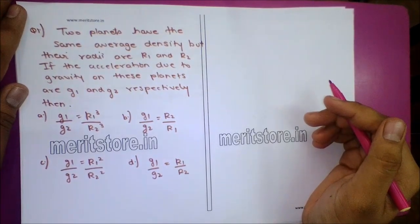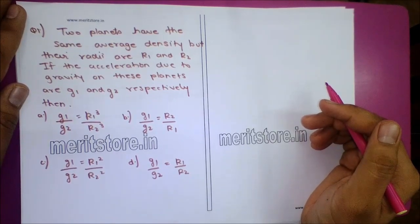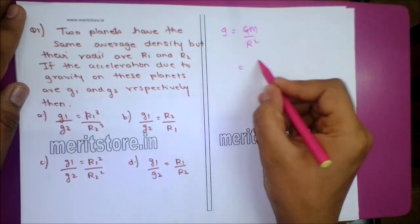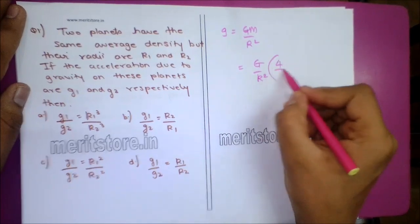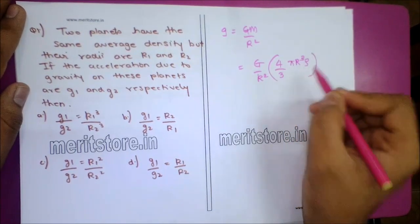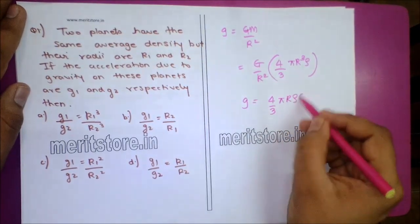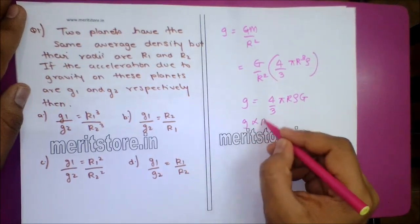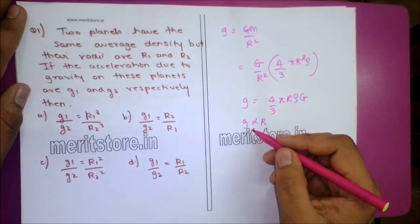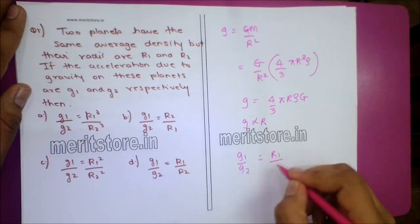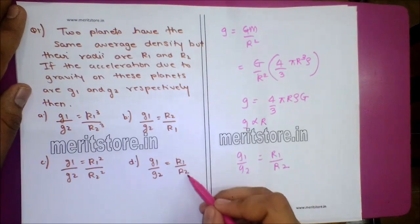Question 1: Two planets have the same average density but their radii are R1 and R2. If the acceleration due to gravity on these planets are G1 and G2 respectively, we know g = Gm/R² = (4/3)πRρG. So g is directly proportional to R, since (4/3)πG is constant and both planets have the same density.